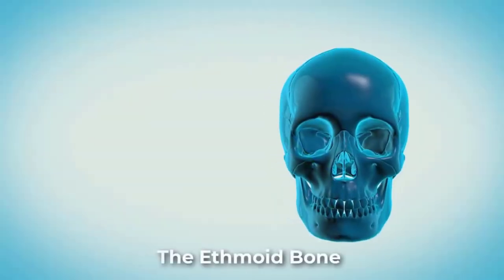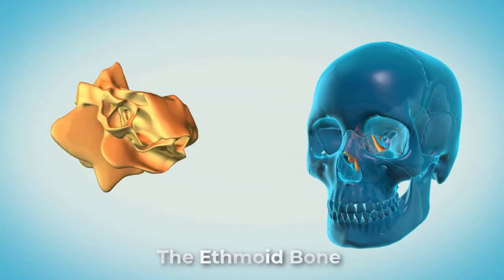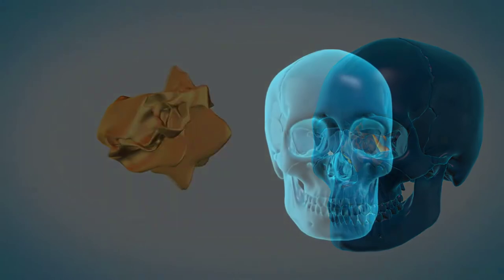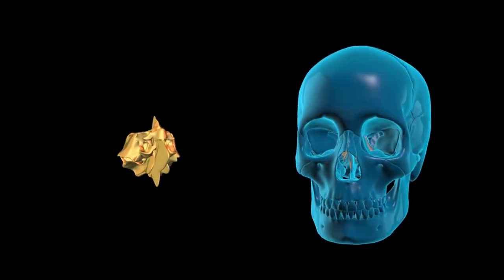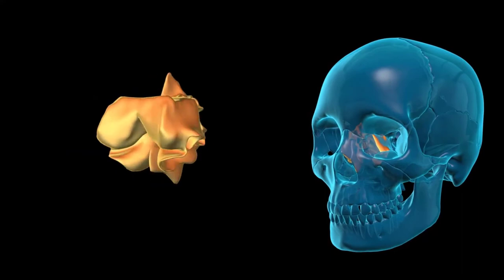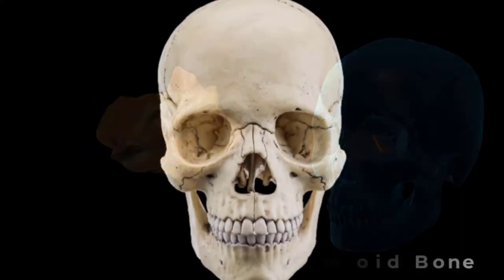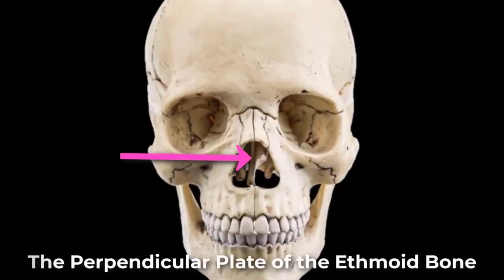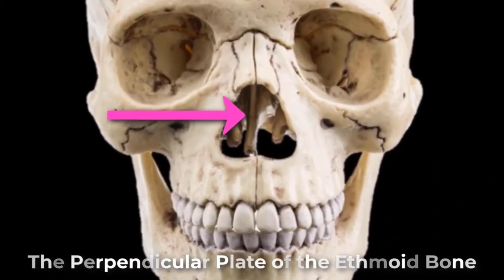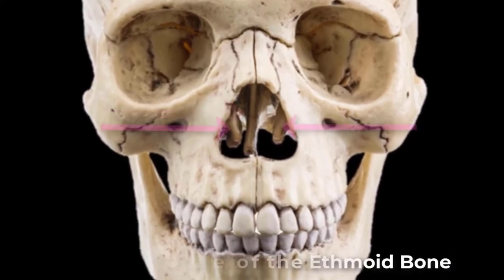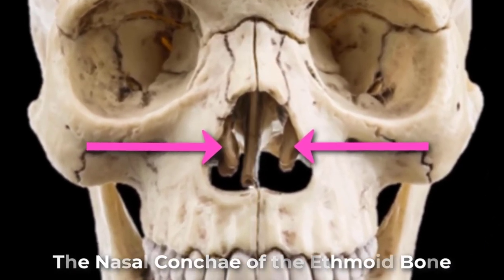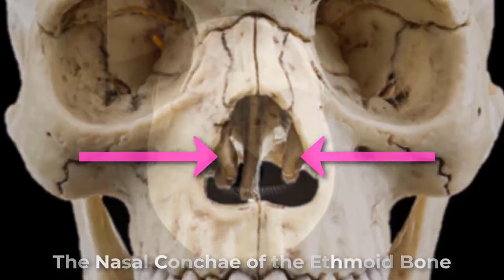The ethmoid bone is a single midline bone that forms the roof and lateral walls of the upper nasal cavity. It also creates the upper portion of the nasal septum and contributes to the medial wall of the orbit of the eye. Within the nasal cavity, the perpendicular plate of the ethmoid bone forms the upper portion of the nasal septum. Extending from each lateral wall are the nasal conchae — thin, curved projections that extend into the nasal cavity.